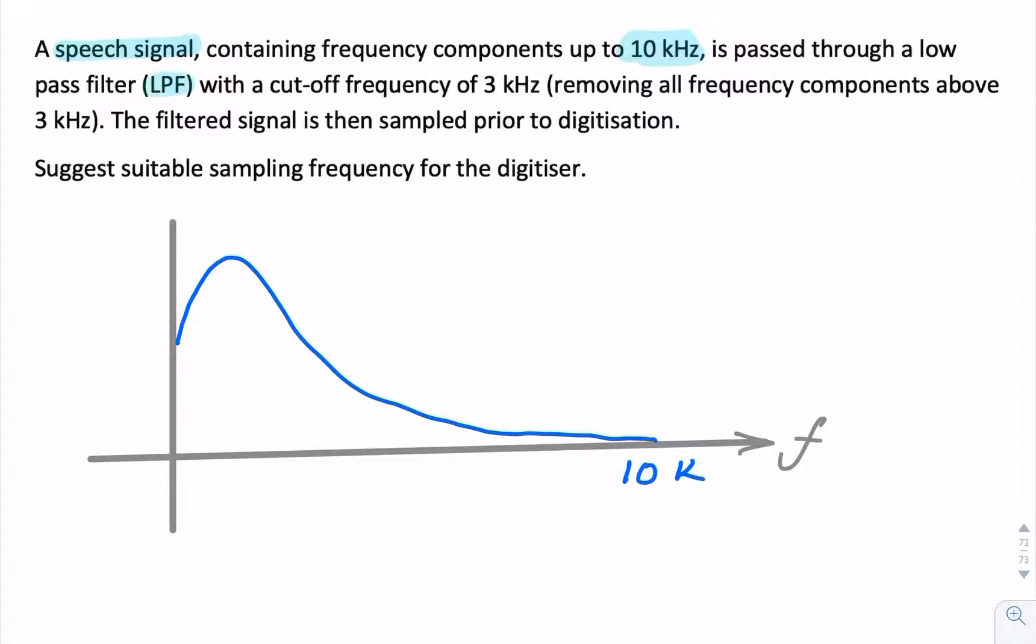But then it passes through a low-pass filter that further band-limits it to 3 kHz. So everything above 3 kHz is removed. And the question is, what's a suitable sampling frequency?